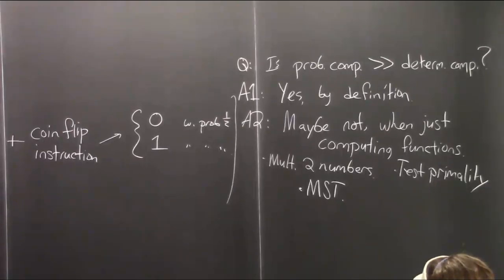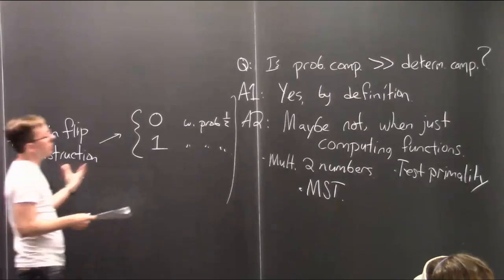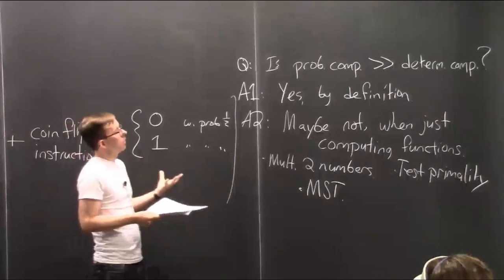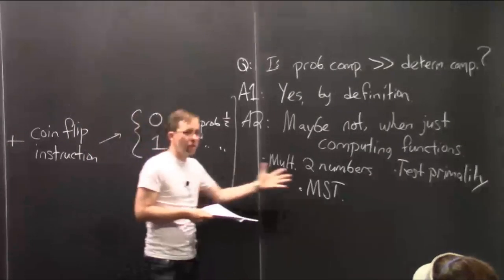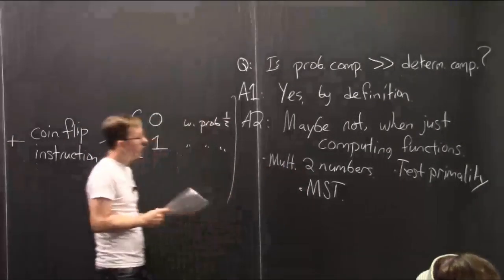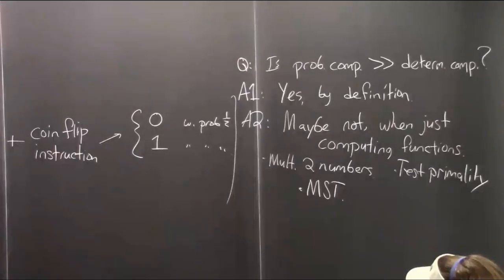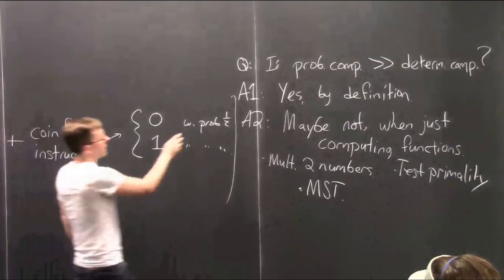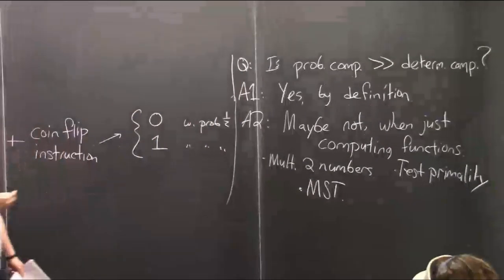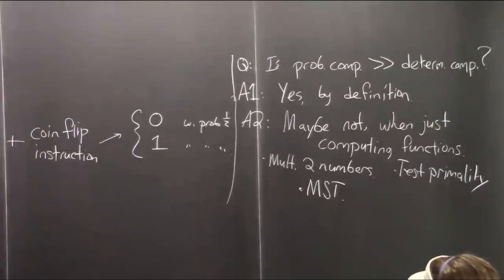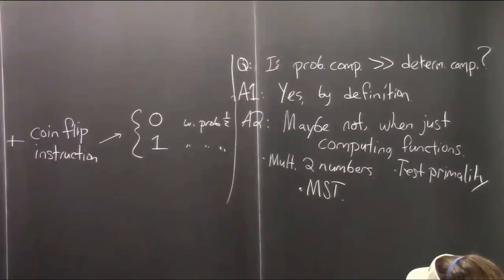Of course, how could it be more powerful? What do you even mean by this? Why would you want to use a probabilistic computation in order to solve a deterministic problem like this? The short answer is that potentially the probabilistic computation could be faster or more efficient in some other way. That's what you might hope for. Of course, there's got to be a downside. The nature of a probabilistic computation is that it has a chance of making an error — getting the wrong answer.